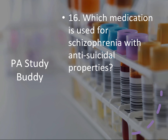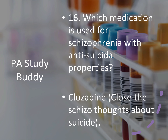Question sixteen: which medication is used for schizophrenia with anti-suicidal properties? They'll give you a stem where a patient is schizophrenic and starts thinking about harming themselves, and ask which medication helps with anti-suicidal thoughts. The answer is clozapine. The way I remember this: clozapine sounds like 'close' — close those schizo thoughts about suicide. No more thoughts about suicide. When they talk about schizophrenia and anti-suicidals, I just want to close that thought — clozapine.